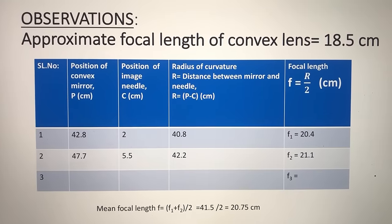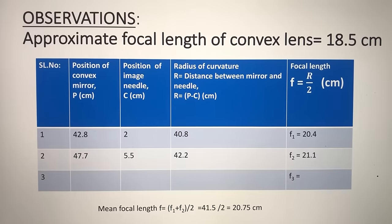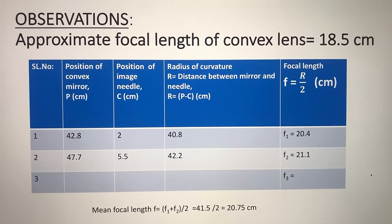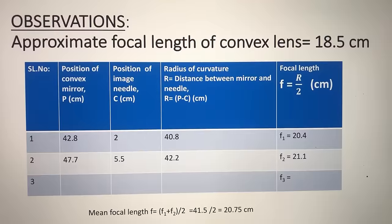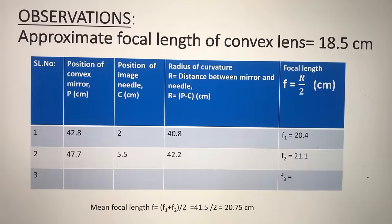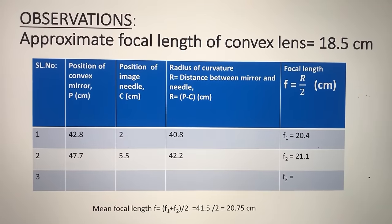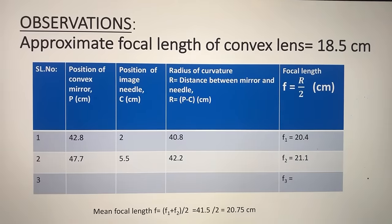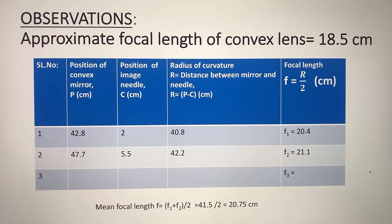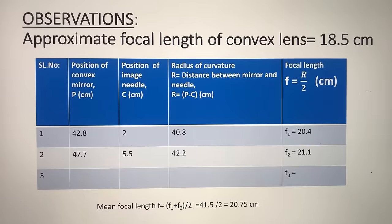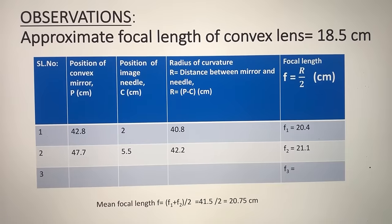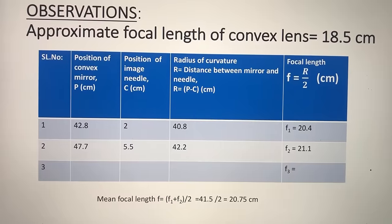For the second reading, the convex mirror was at 47.7 cm and the image needle position was 5.5 cm. Radius of curvature R = 47.7 − 5.5 = 42.2 cm. Focal length F₂ = R/2 = 42.2/2 = 21.1 cm. Mean focal length F = (F₁ + F₂)/2 = (20.4 + 21.1)/2 = 41.5/2 = 20.75 cm.